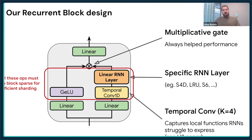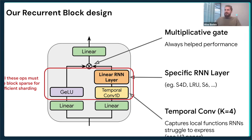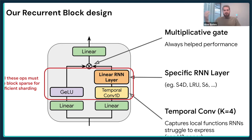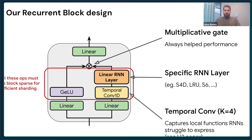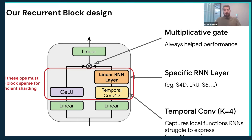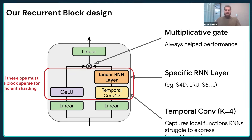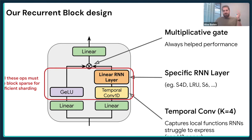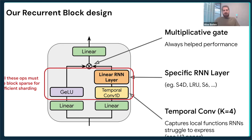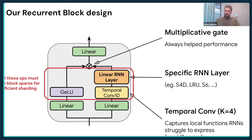An important part when designing these models at scale is thinking about how to shard different parts. Most models at scale require sharding across devices, and if you don't do this properly you'll incur significant communication between devices, making your models slower than a usual transformer. To achieve efficient sharding, everything inside the recurrent block is essentially block-sparse, where the number of blocks is constructed such that you can shard across devices — usually either 8 or 16 blocks, which is the typical number of devices.